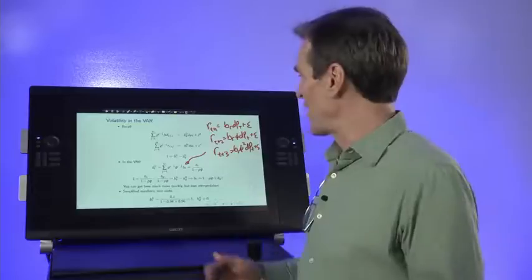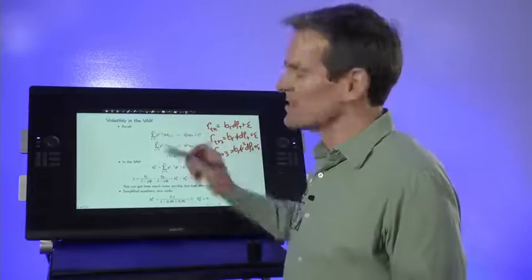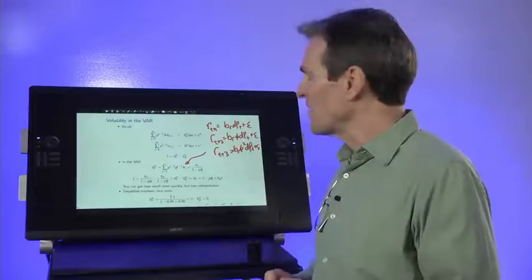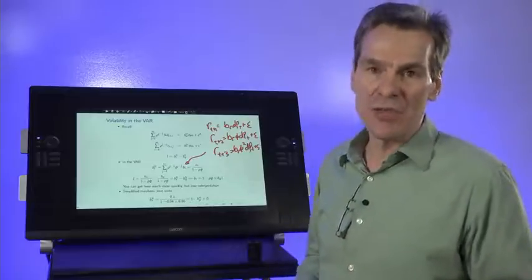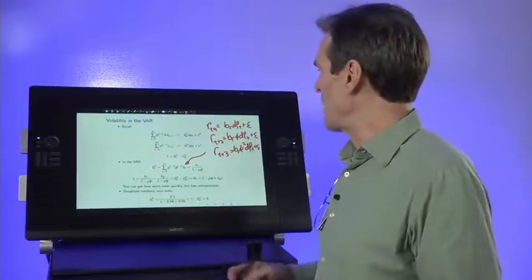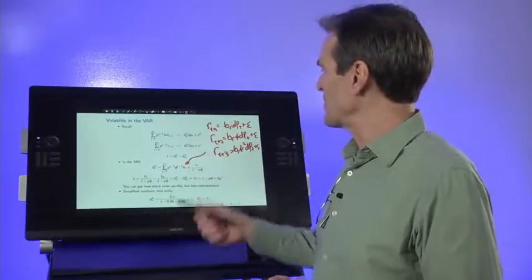But we were left at the puzzle of how do you estimate an infinite period geometric sum of dividend growth? Well, the VAR lets us do that within the limits of is the VAR accurate. So how do we do that? Well, let's impose the VAR.